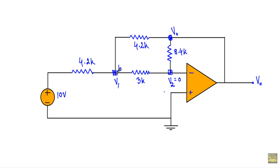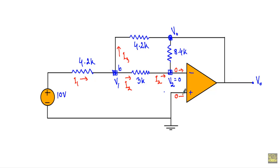To apply KCL at the nodes, I need to establish current directions. From the 10-volt source, a current I1 enters node B. A current I2 leaves node B toward the inverting terminal, and a current I3 also leaves node B. I2 arrives at the inverting terminal. Since the op-amp is in negative feedback, the inverting and non-inverting terminal currents are zero, so I2 returns through the 8.4 kΩ resistor as current I4.